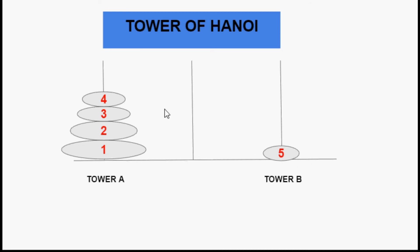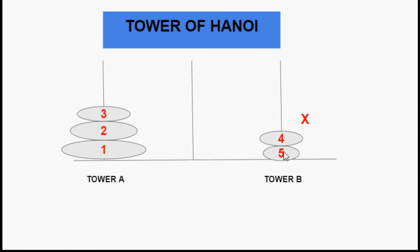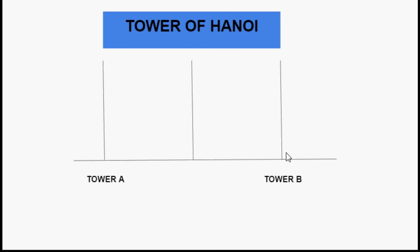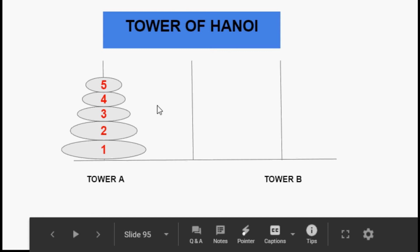Then I take out disc number four and place it in tower B. But the third rule says you are not supposed to place a larger disc on a smaller disc, which means this would be a wrong method. So I cannot do it this way — that is why we need the auxiliary tower, the third rod, to make the transfer correctly.